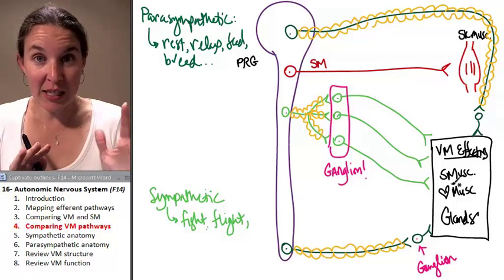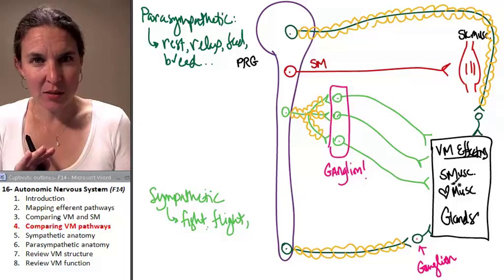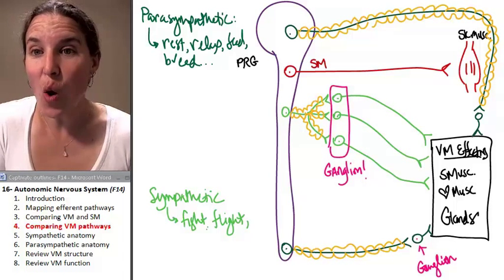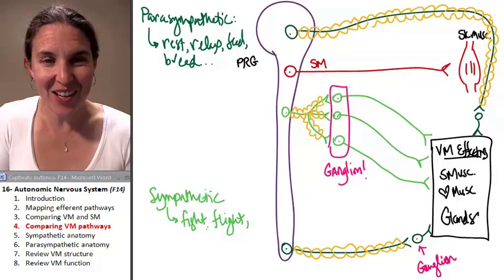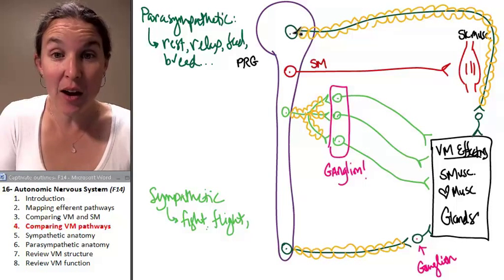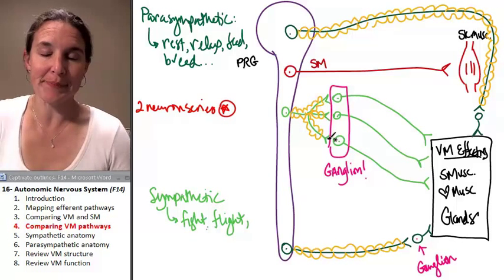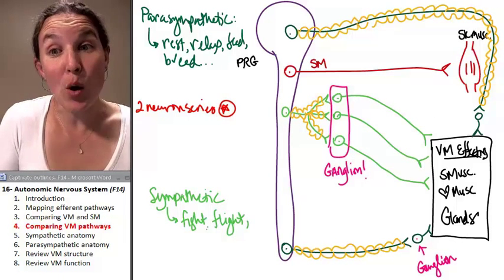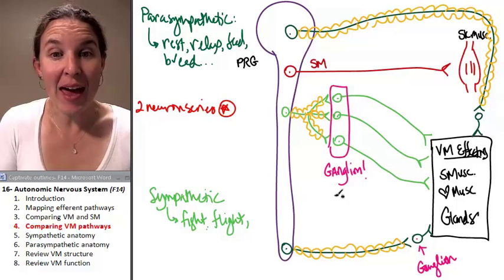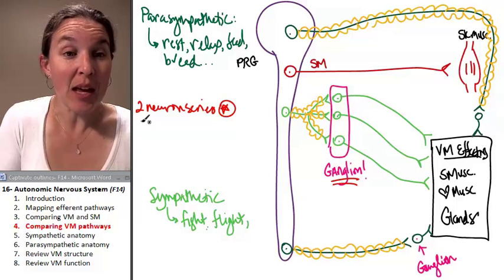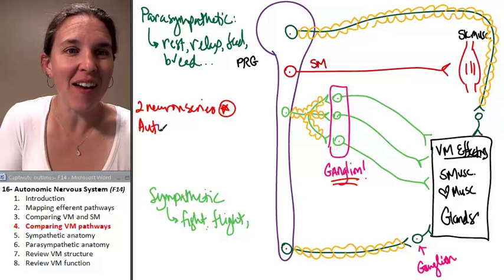Are they anatomically similar? They have anatomical similarities. What are some of the characteristics that they have in common? They both are two neuron series. My little red one is what they have in common. They both have an autonomic ganglion.